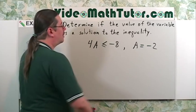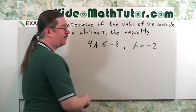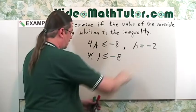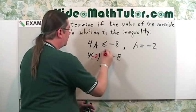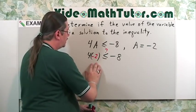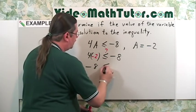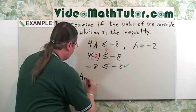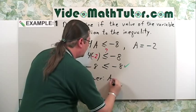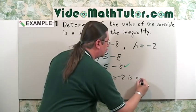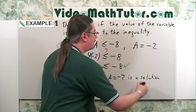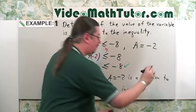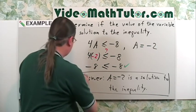Let's do one more. I want to determine if a equals negative 2 is a solution to this inequality. We're going to rewrite this as a template and replace the a with negative 2. Let's simplify: 4 times negative 2 is negative 8. Is that less than or equal to negative 8? Yes, it is. So a equals negative 2 is a solution to the inequality.